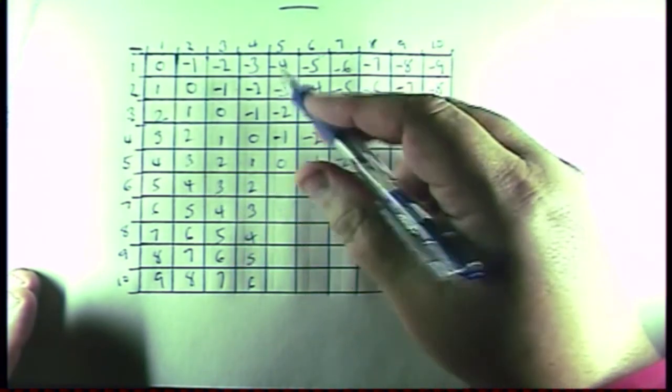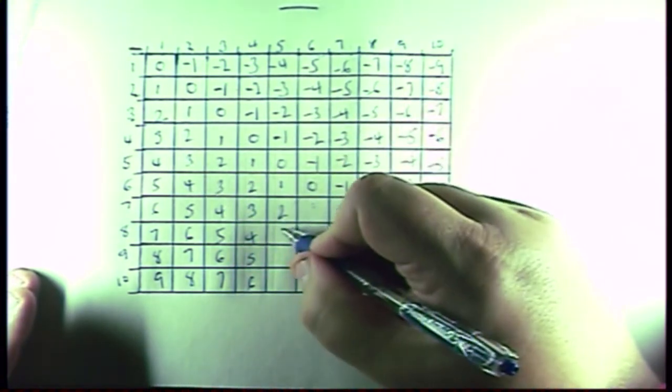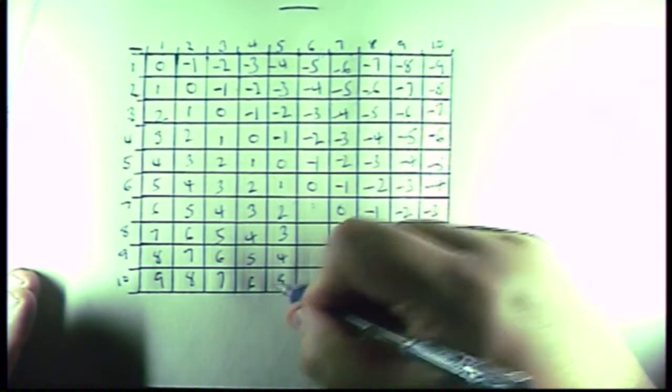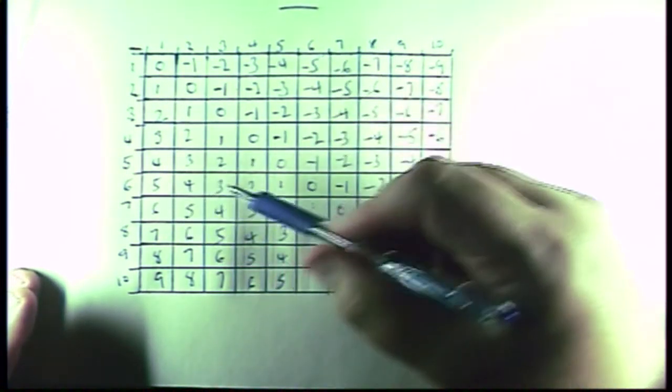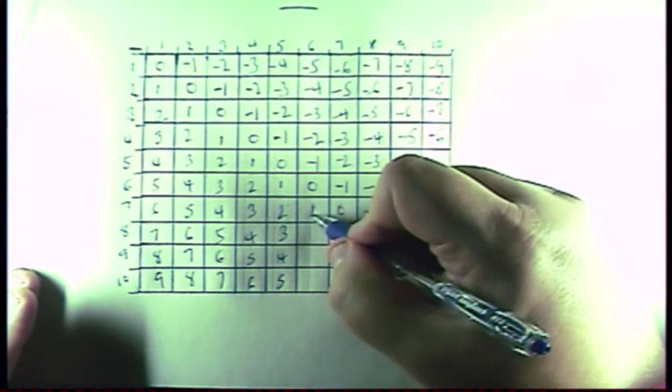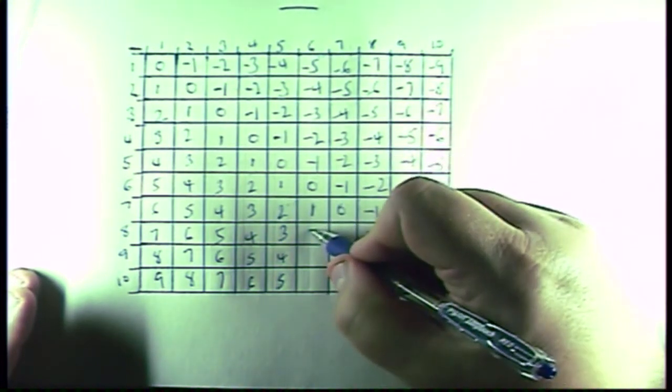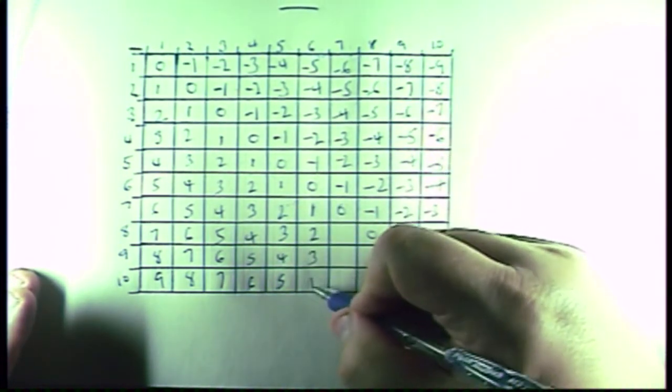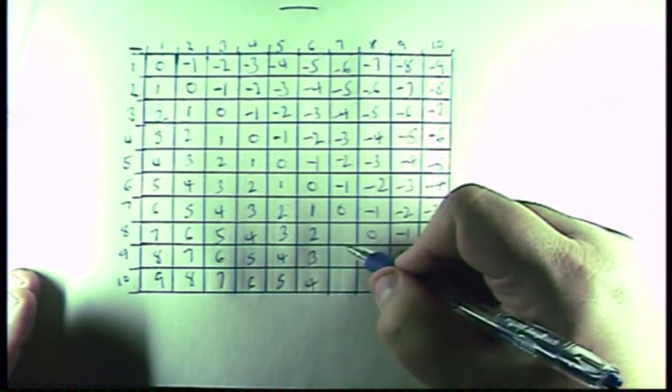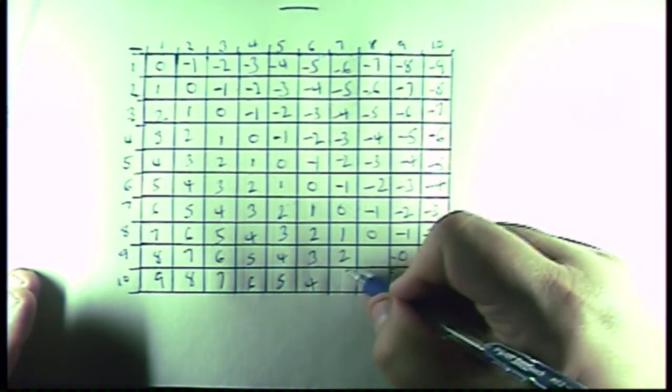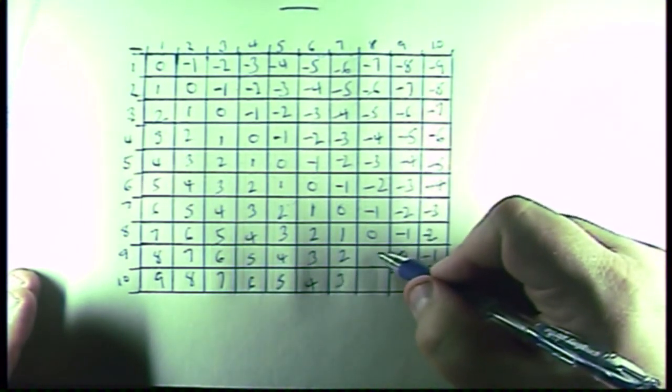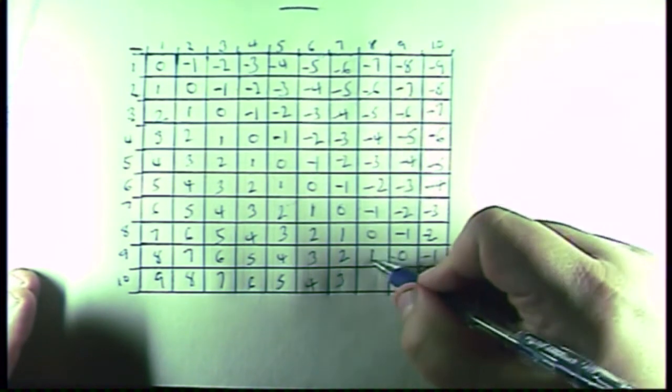Again, 6 minus 5 is a 1, 2, 3, 4, and a 5. And then 7 minus 6 is a 1. And then it goes again, 2, 3, 4. And then 8 minus 7 is again a 1, 2, 3. And then 9 minus 8 is again a 1, and a 2.